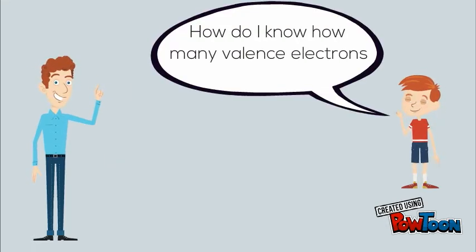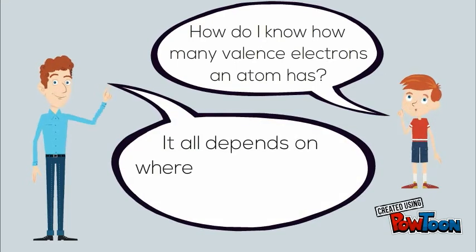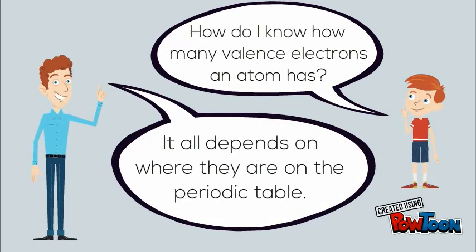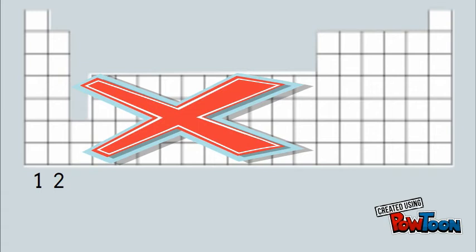The final question is, how do I know how many valence electrons an atom has? The answer is that it just depends on its location on the periodic table. If we look at a periodic table, everything in column one, or group one, is going to have one valence electron. Everything in group two is going to have two. We're skipping the transition metals, and then we continue on.